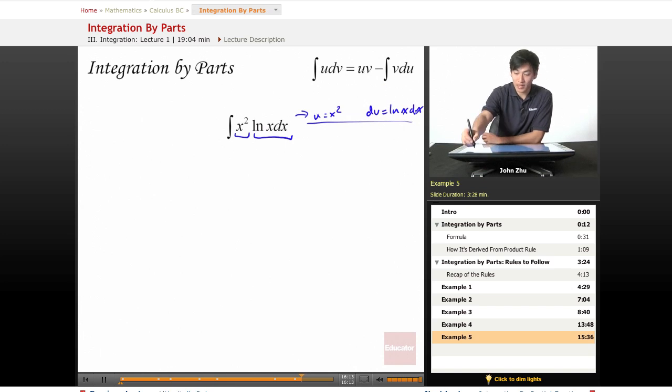So let's go ahead and switch those around and use u to be ln of x and dv to be x squared dx.